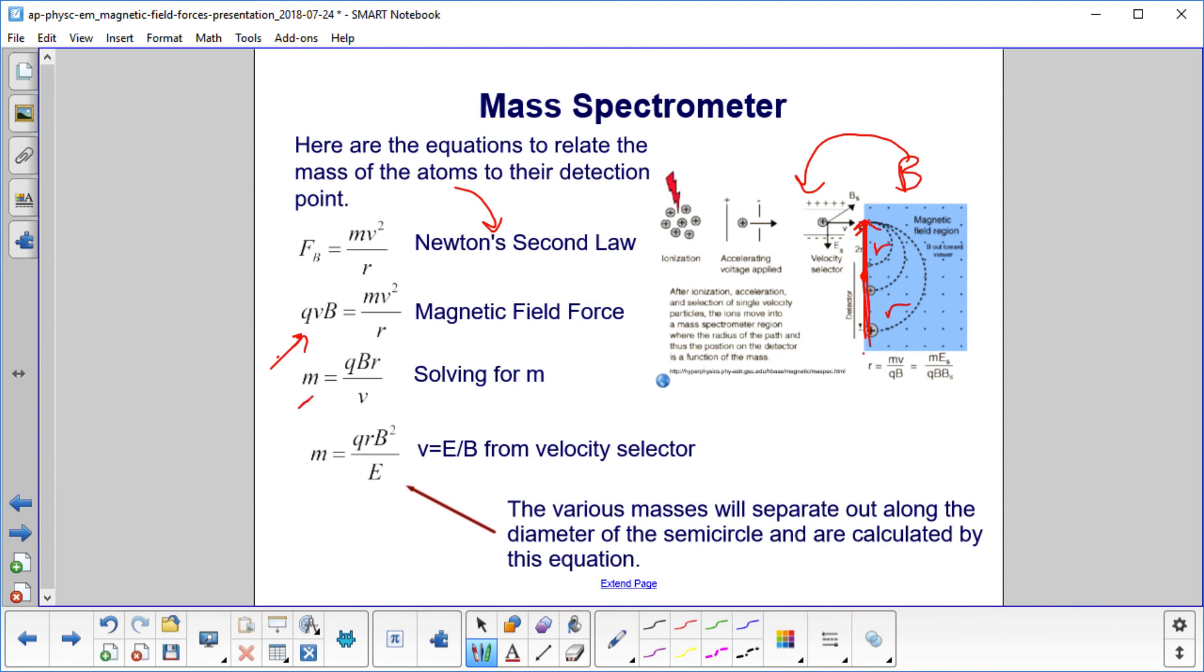We solve for m. One last step, because we never really measure the velocity, but we do know that's equal to E over B from the velocity selector. And here's our final answer. m is qrb squared over E.